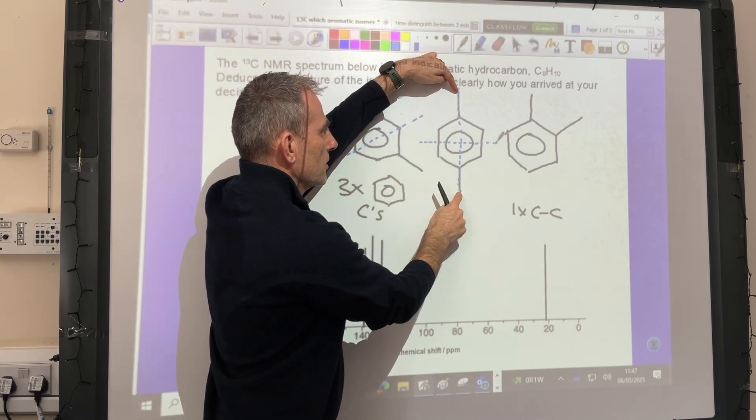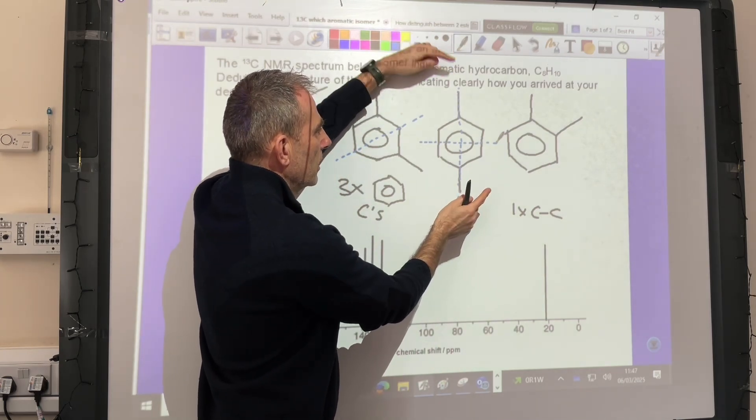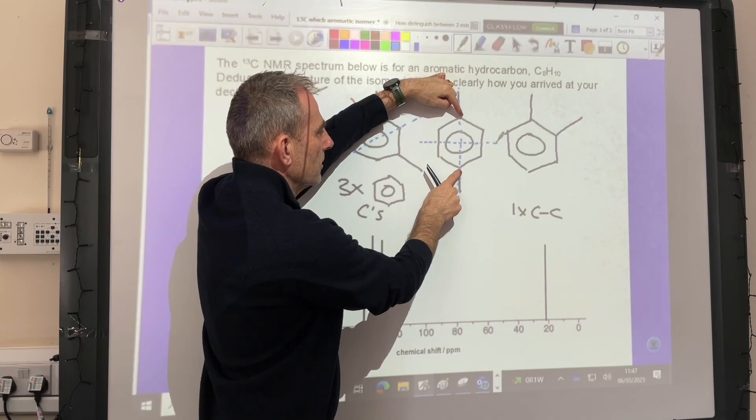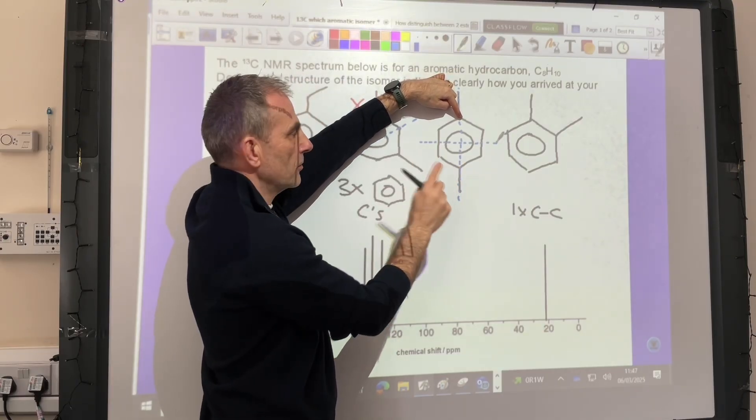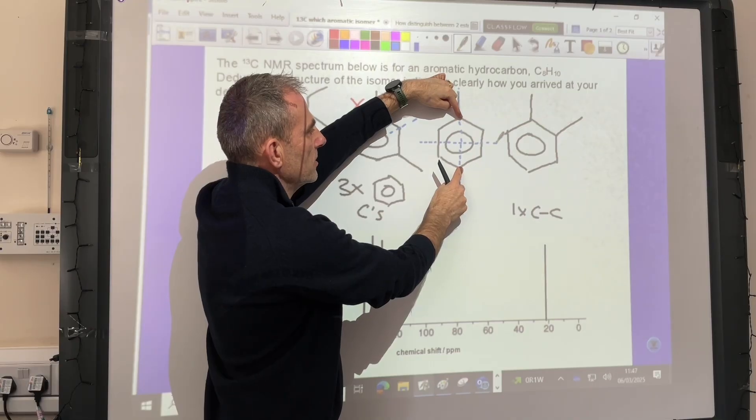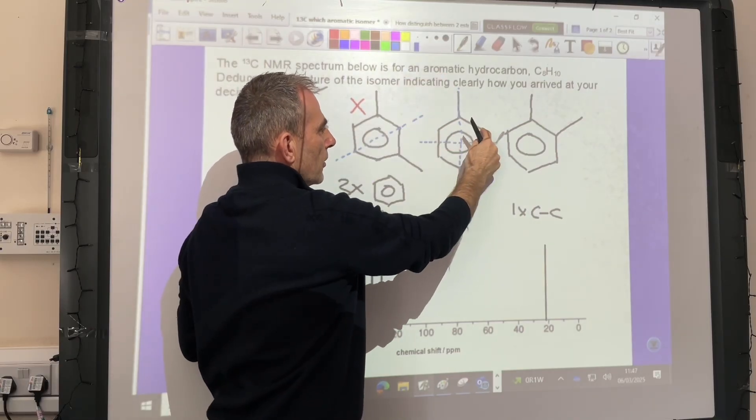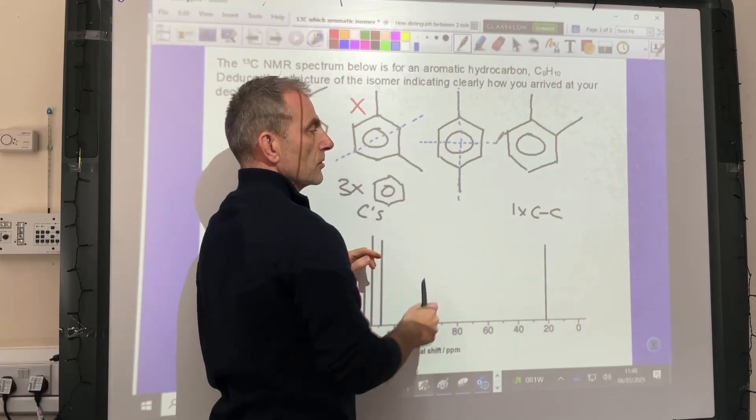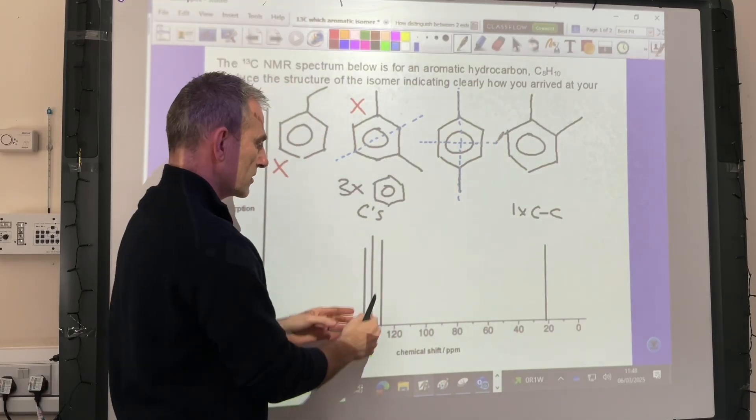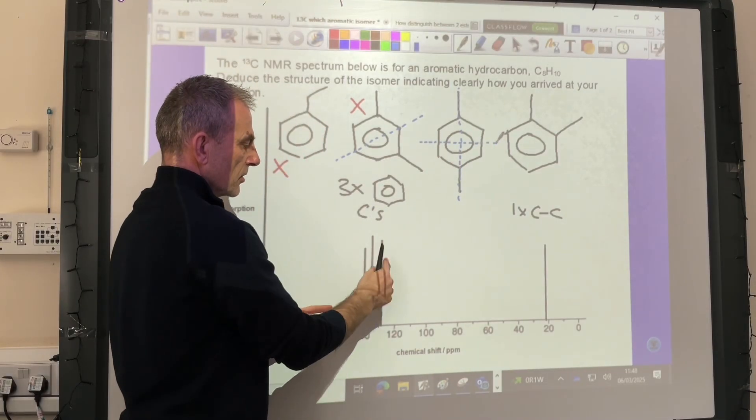If we look at the carbons in the benzene ring, they're equivalent to each other - that's one so far in the benzene environment. But these four carbons are all equivalent to each other, so there's only two benzene carbon environments. This one would only give two signals here, so it's not that one.